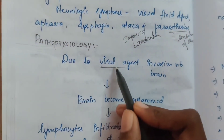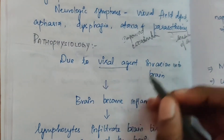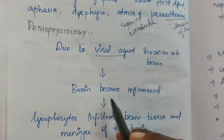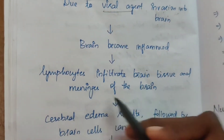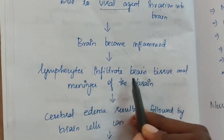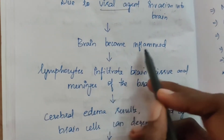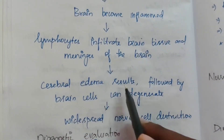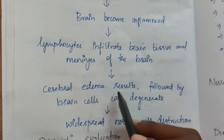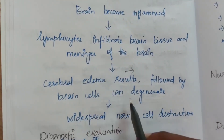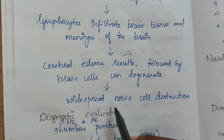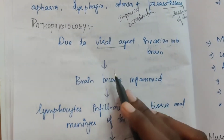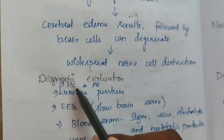Pathophysiology: viral agents such as Epstein-Barr virus and HSV invade the brain, causing inflammation. Lymphocytes infiltrate the brain tissue and meninges, leading to cerebral edema. This is followed by brain cell degeneration, which can result in widespread nerve cell destruction.